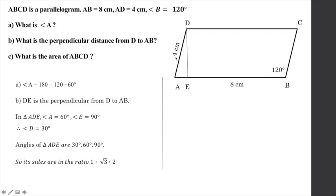The side opposite 90 degrees has length 4. Using the ratio — 90 degrees opposite length is 4, and the corresponding side opposite 60 degrees is in the ratio root 3 to 2. So the perpendicular distance DE equals 2 root 3.